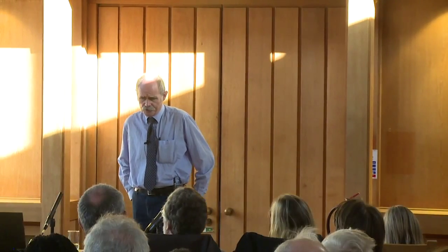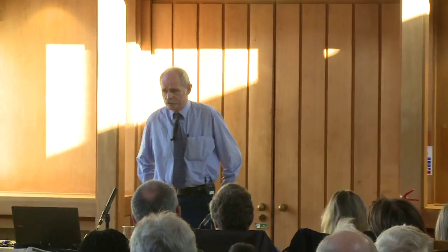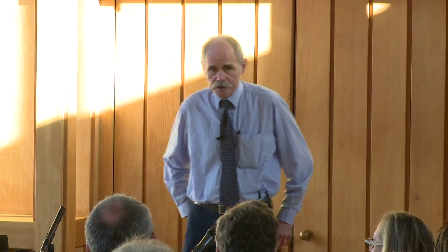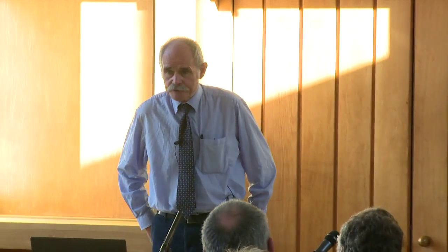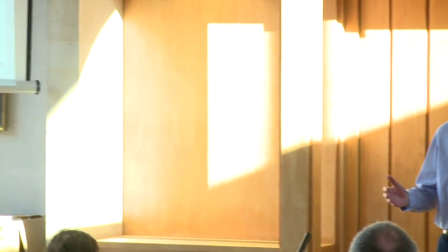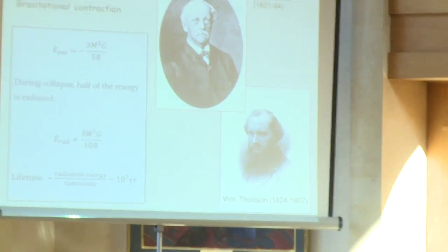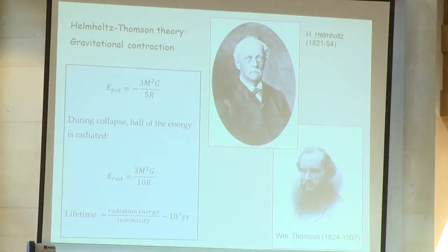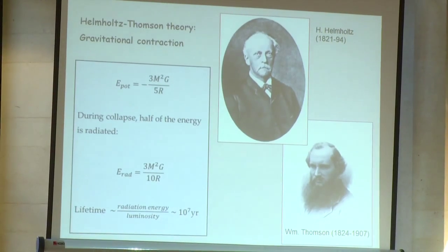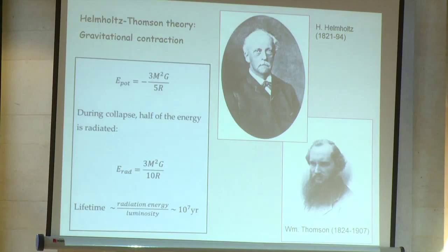I'm going to speak about the solar energy generation problem and how it was more or less solved in the 1930s. But in spite of the subtitle 'From Eddington to Bethe,' I want to start a little earlier. It would be appropriate to start in the late Victorian era with the theory of solar energy which was the favoured one of the period — the so-called gravitational contraction theory, also known as the Helmholtz-Thompson theory.